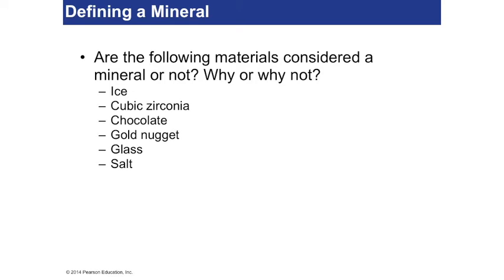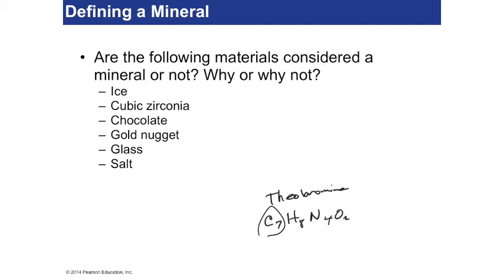How about chocolate? Chocolate has a chemical formula. The active compound is actually called theobromine, which is strange since there's no bromine in it. This is the alkaloid, or the bitter substance in chocolate, and it's carbon-based. Because it's carbon-based, even though it's naturally occurring and has a very specific chemical structure, it's not inorganic. So chocolate cannot be a mineral.